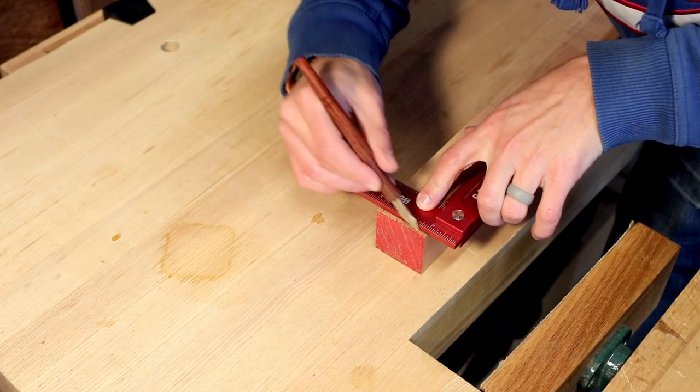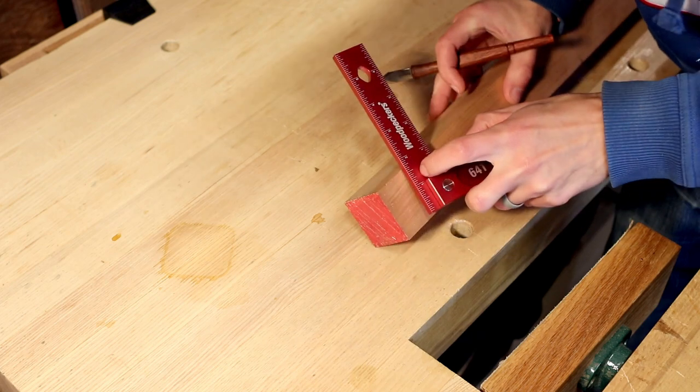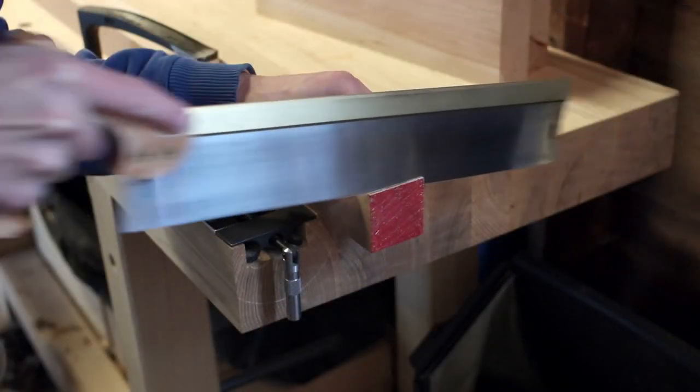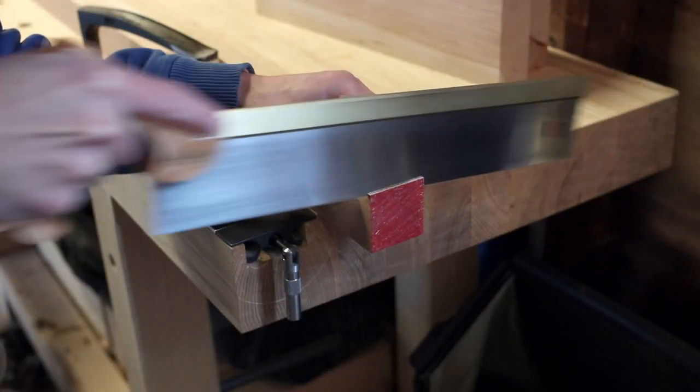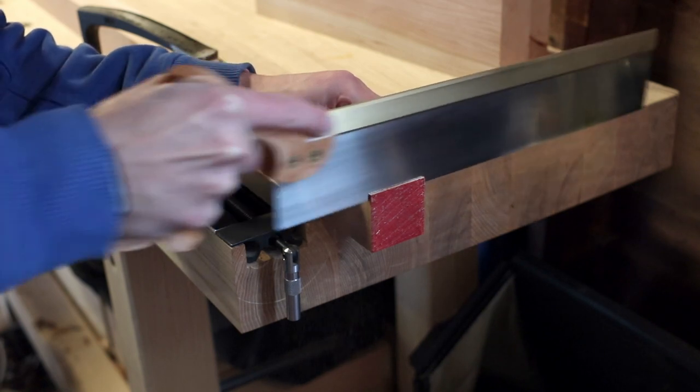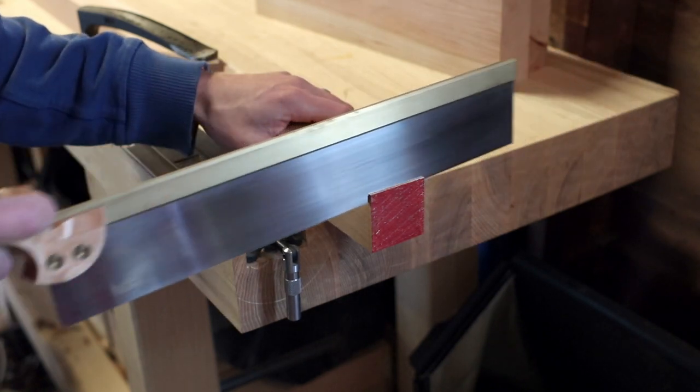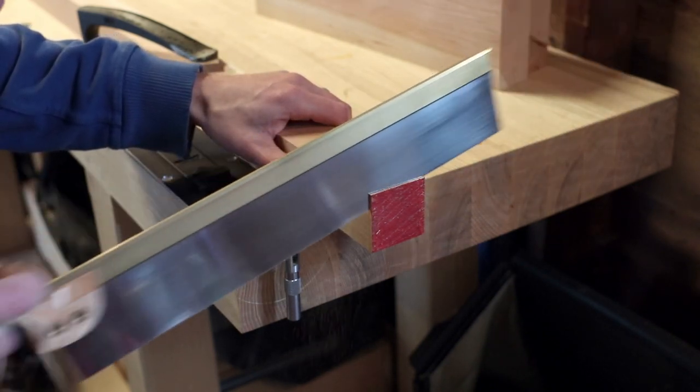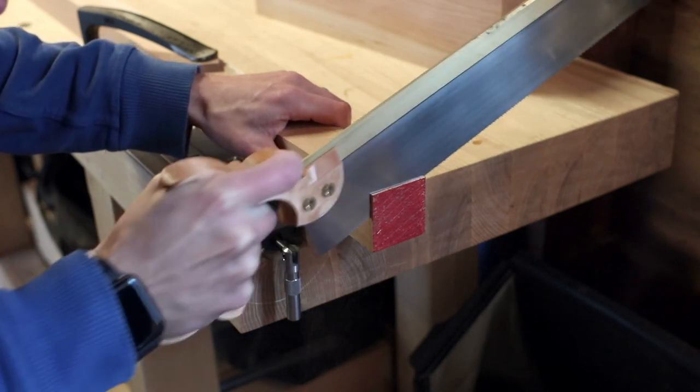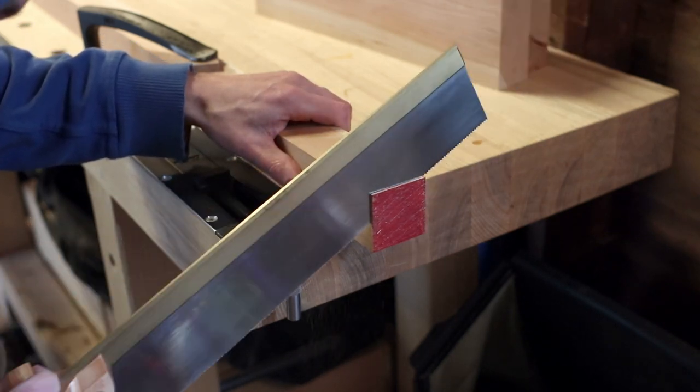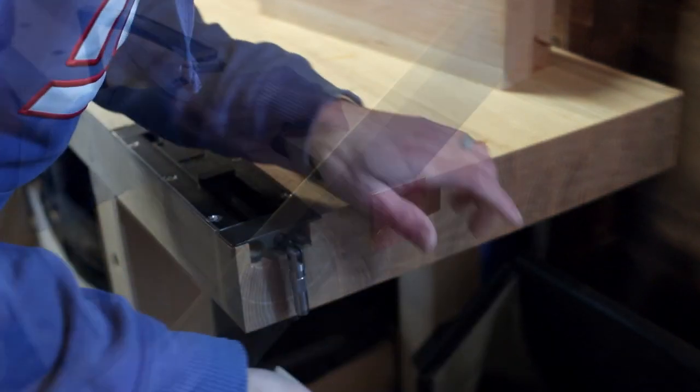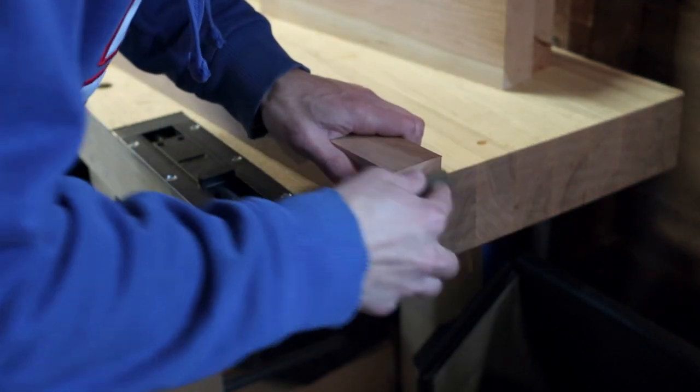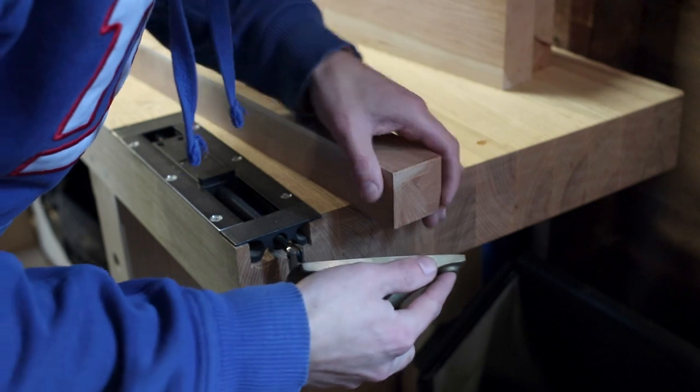Once everything is four-squared on all sides—in some cases you might not need to four-square, but I'll go ahead and mark it and do my final cutting to length. After sawing, I'll usually go back with a block plane just to make sure the end grain looks nice.